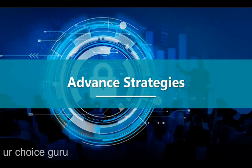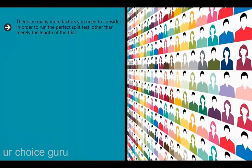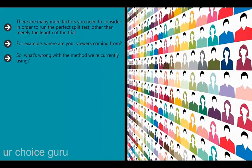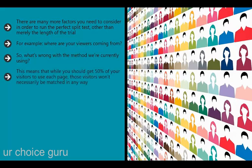There are many more factors to consider when running the perfect split test, beyond merely the length of the trial. For example, where are your viewers coming from and how are they matched? In scientific studies it's always important to make sure that participants in group A are as similar to participants in group B as possible. If you use the redirect method, you're essentially sending visitors to one of two websites based on completely random chance - a coin toss. Pure chance might mean that everyone from Asia ends up on one version of your website while everyone from the US ends up on another, skewing your results due to cultural differences.